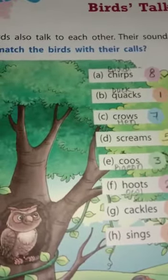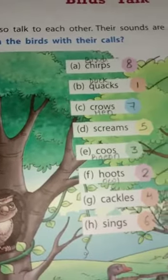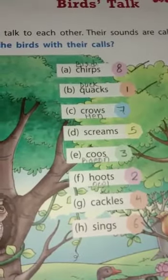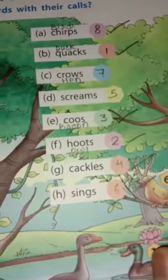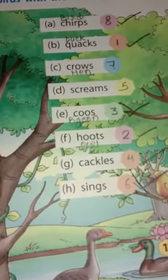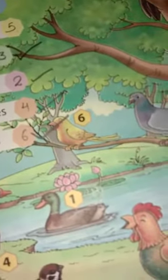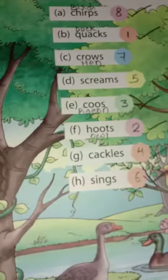Birds also talk to each other, and their sounds are called calls. Here are some different birds and their sounds: birds chirp, dog barks, hen crows, pigeon coos, owl hoots, and birds sing.